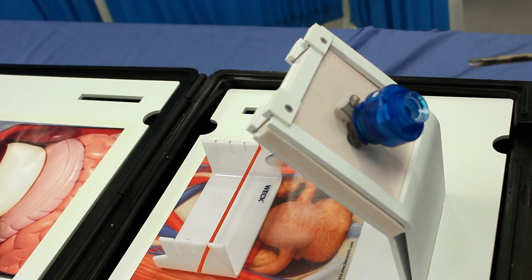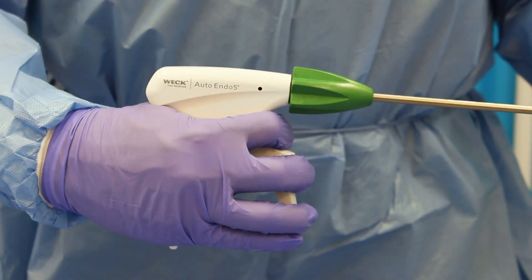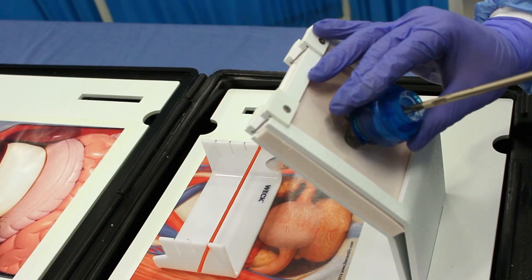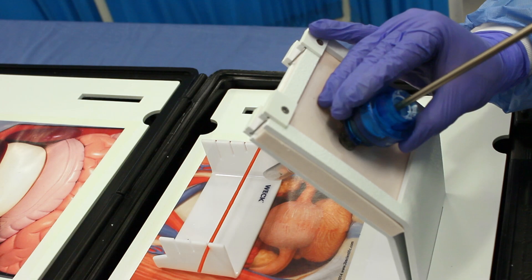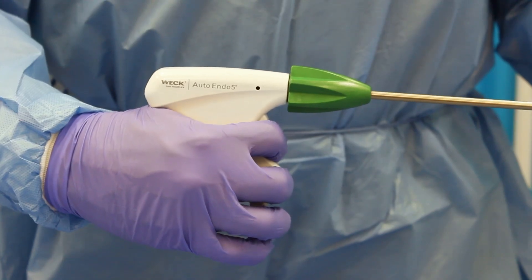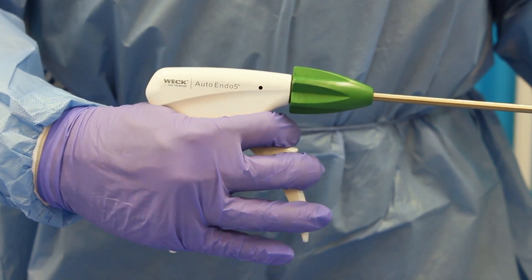To insert the applier through a cannula, squeeze the trigger until the jaws close sufficiently to permit entry into the cannula. Do not pull the trigger far enough to completely close the clip. Insert the applier jaws and shaft down the cannula. Once the applier jaws are visible past the distal tip of the cannula, release pressure on the trigger to return the clip to full aperture.